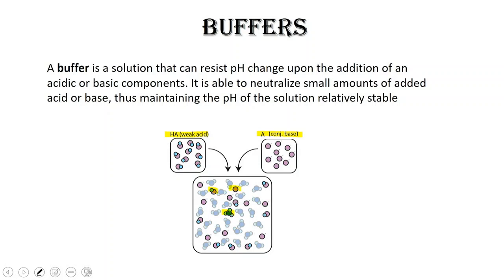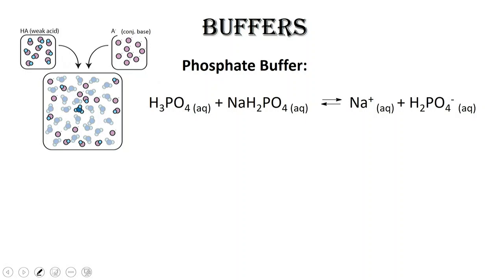The acid and the conjugate base are going to react with any added acid or base to the solution. Here we're going to take a look at a representative buffer — the phosphate buffer — where we have phosphoric acid plus its conjugate base. Notice that the conjugate base exists as a compound; there's no such thing as ions we can purchase in solid form. We have to have salts, so this is actually the salt of the conjugate base.